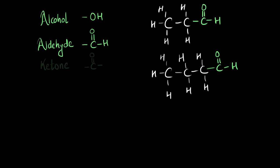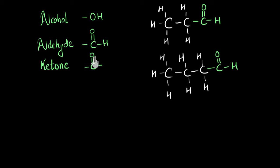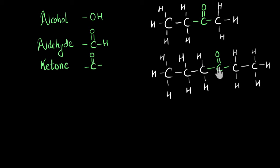Now let's look at another functional group: the ketone group. The group of atoms here is carbon double bonded with oxygen. This is pretty similar to aldehyde — they both have a carbon double bonded with oxygen — but the difference is that ketone is open at both ends. At both ends, we will have carbon chains attaching. Whereas in aldehyde, one side has a hydrogen atom and only on the one side will we have carbon chains. If one of those carbon chains were replaced by a hydrogen atom, we would call it an aldehyde group, not a ketone group.